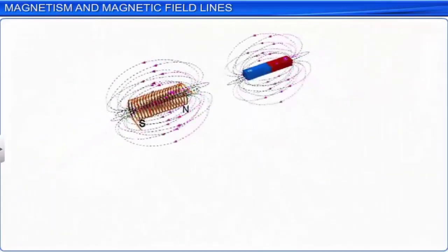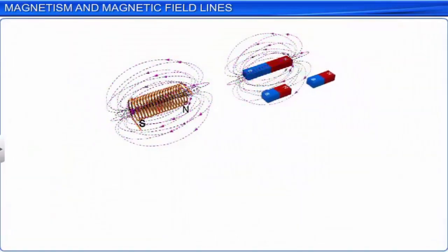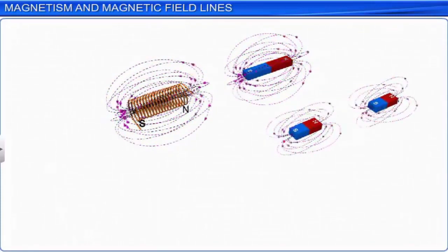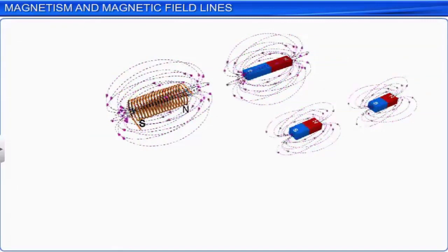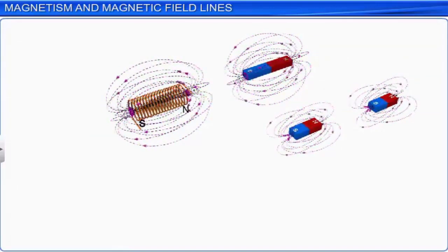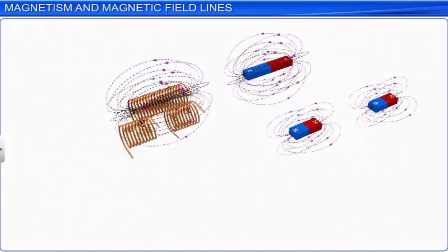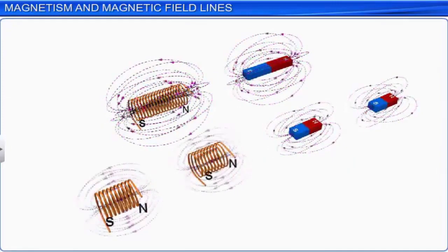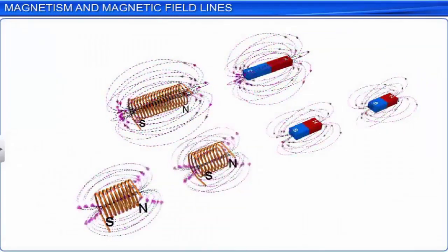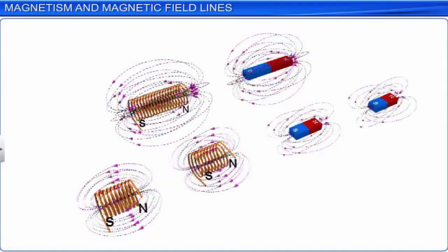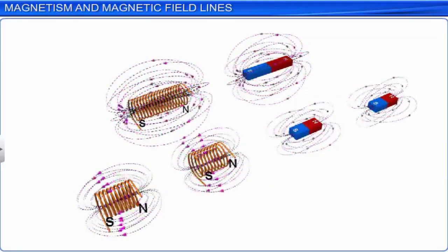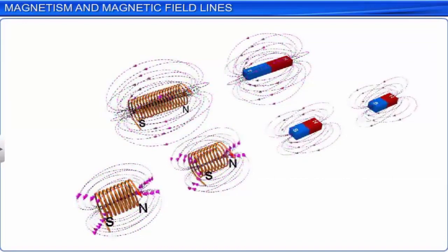We learnt earlier that if a bar magnet is cut into two pieces perpendicular to its length, two small bar magnets are formed. Similarly, if a solenoid is cut perpendicular to its length into two parts, two solenoids of smaller length are obtained. The two solenoids produce weak magnetic fields around them. Thus, each smaller solenoid acts like a small bar magnet.